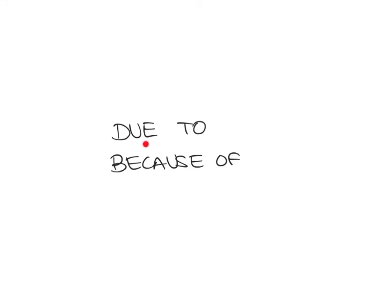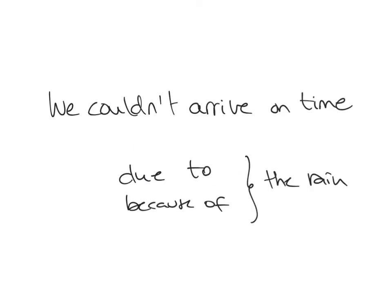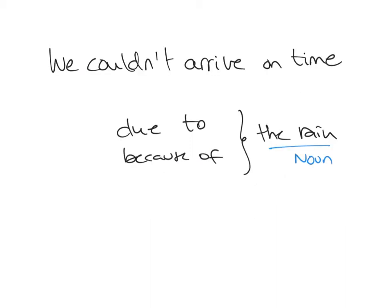Let's see how to use the prepositions 'due to' and 'because of.' For example, you could say 'I'm sorry we couldn't arrive on time due to the rain,' or 'we couldn't arrive on time because of the rain.' In both cases, because they are prepositions, the typical information you're going to find is going to be a noun group.